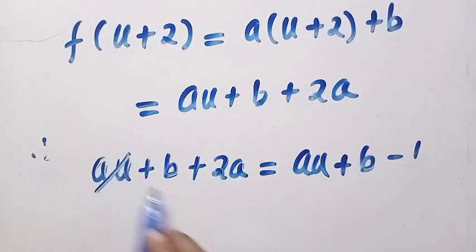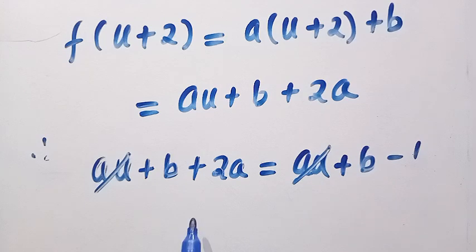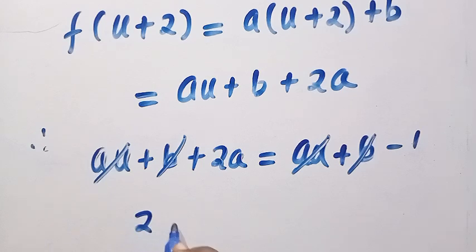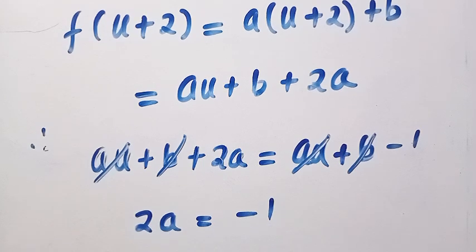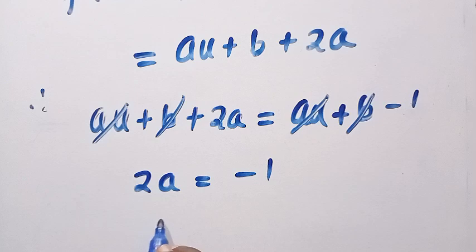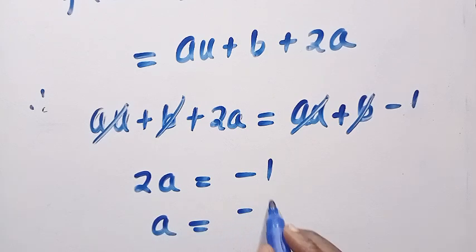So au cancels au, and b cancels b. When these two negate each other, we are going to have 2a equals minus 1, which draws the conclusion as a equals minus 1 divided by 2.